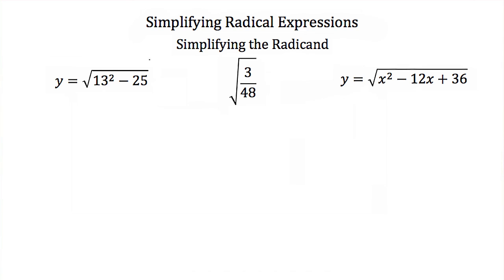Let's look at our first example. If we have y is equal to the square root of 13 squared minus 25, well 13 squared minus 25 is very difficult to take the square root of. However, if we square out our 13, we'll get y is equal to 169 minus 25, because 13 squared is 169.